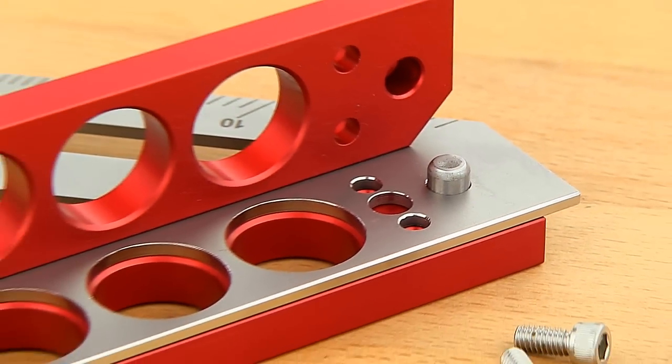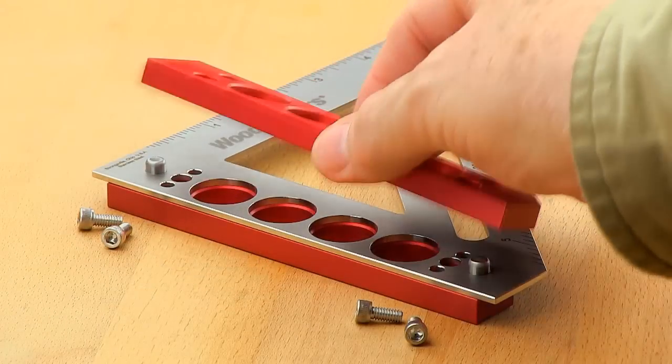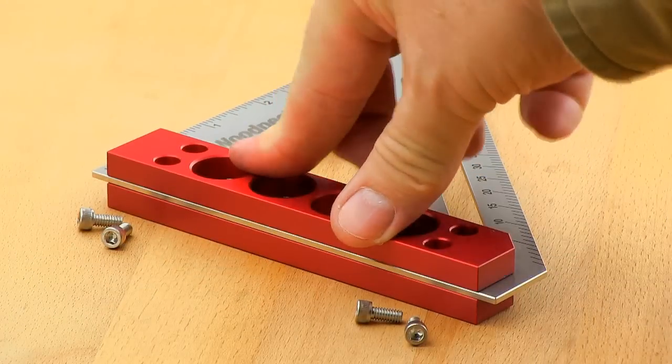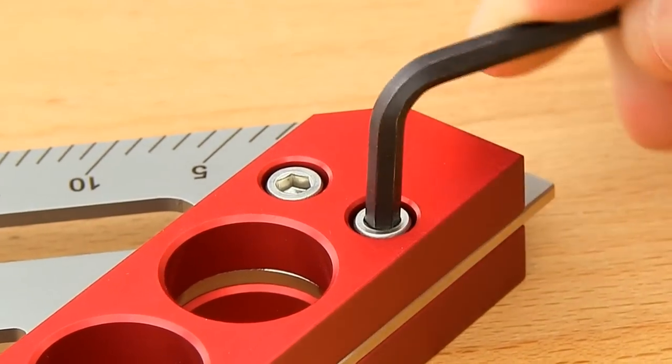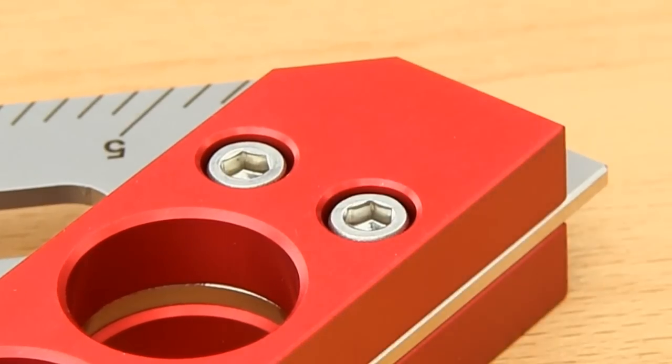Precision milled tight tolerance steel pins register the tool's aluminum handles to the base of the square. Stainless steel socket head screws are used to finish the fastening.